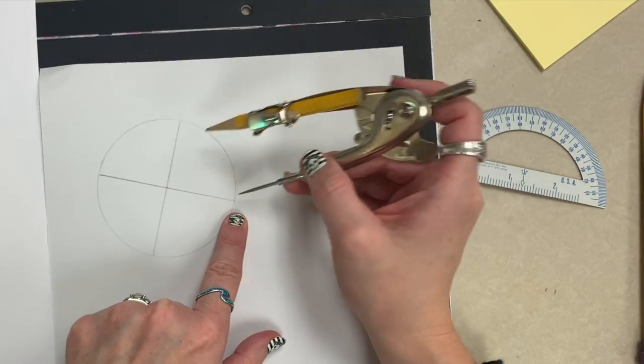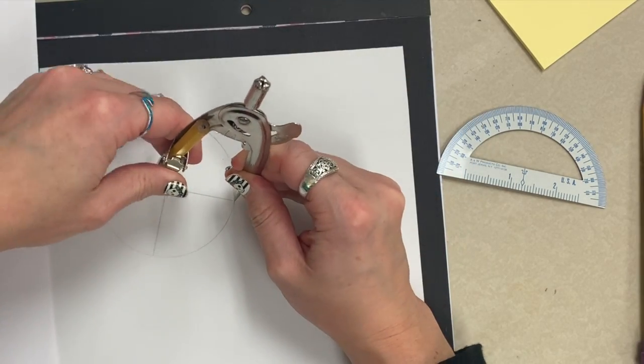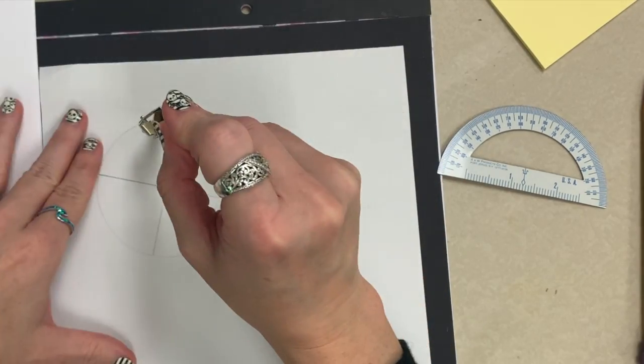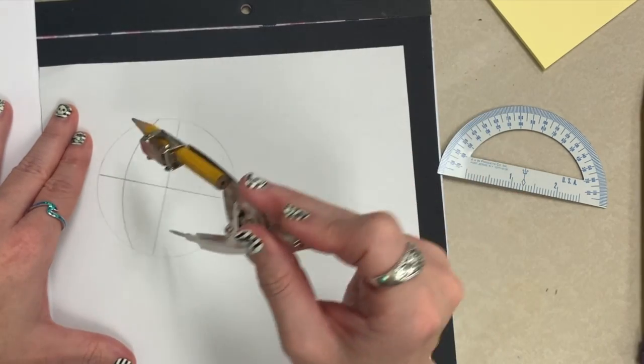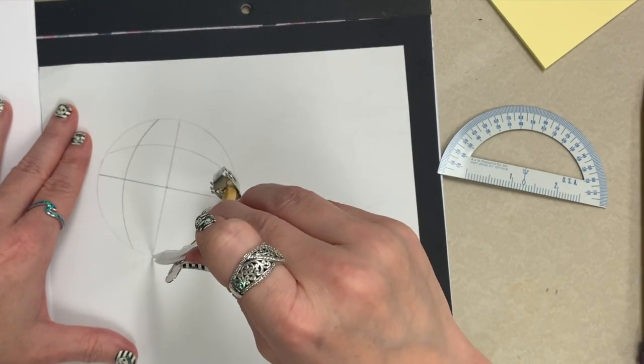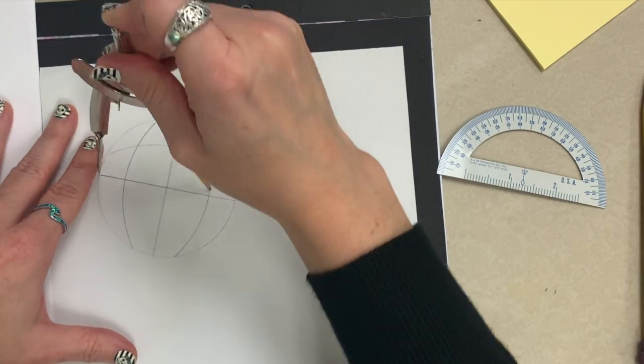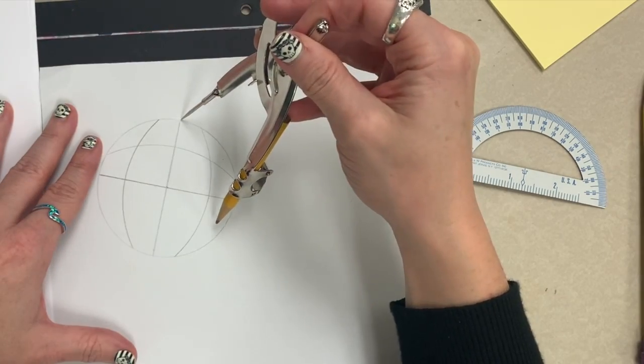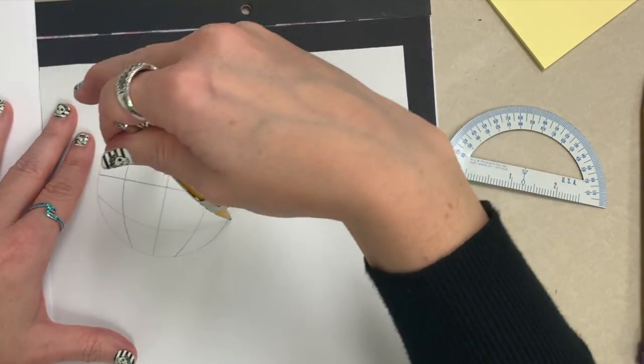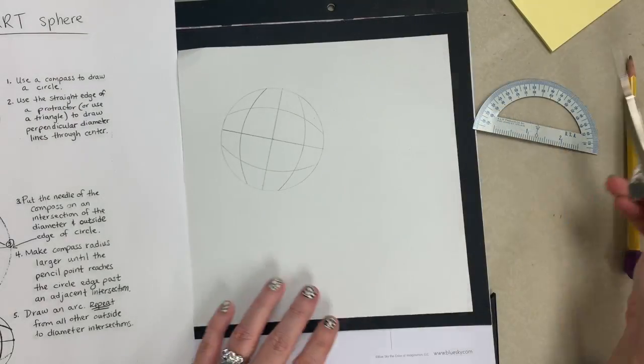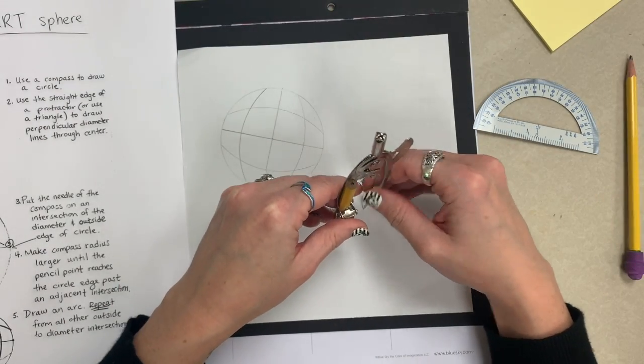Finally, put your needlepoint where a diameter intersects with the circumference or edge of your circle. Make it a little larger and draw arcs from each of these intersecting diameter points. This will make the rounded checkerboard effect of an op-art sphere.